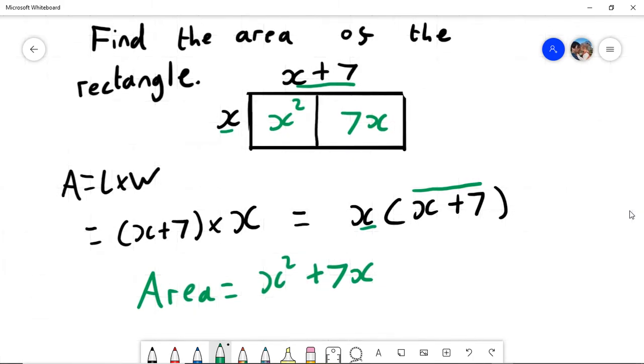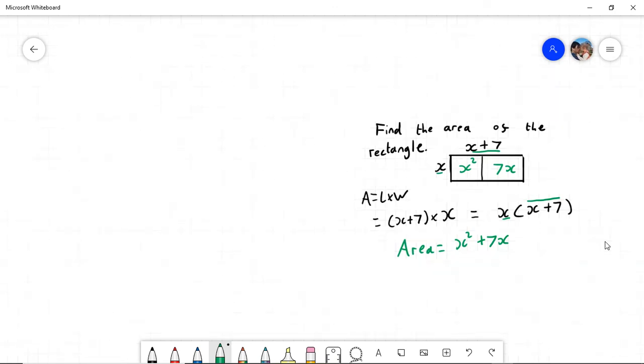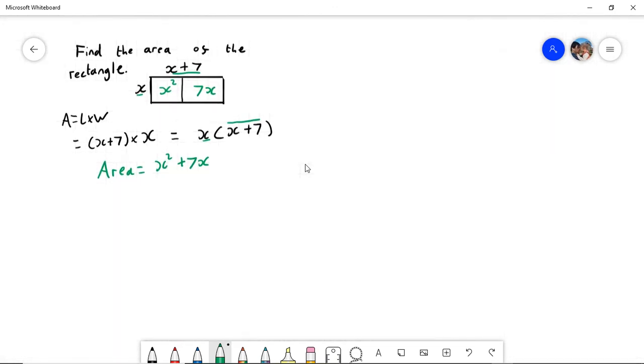Now if the question wants to be really tricky, it'll do something similar. It'll say something like this: the area is actually equal to 18 centimeters squared. Find x.